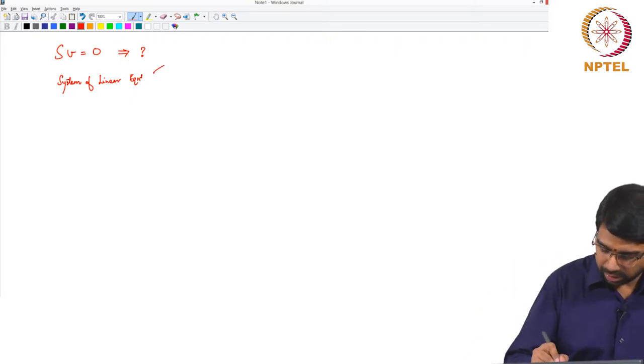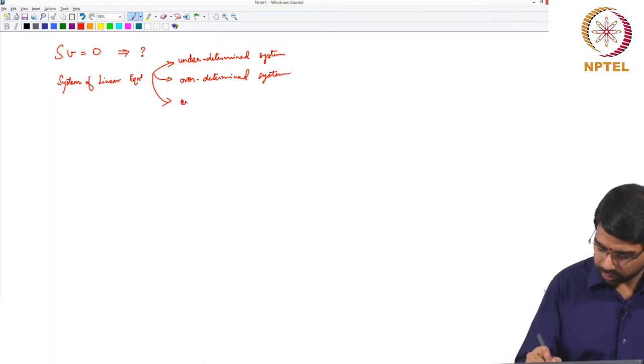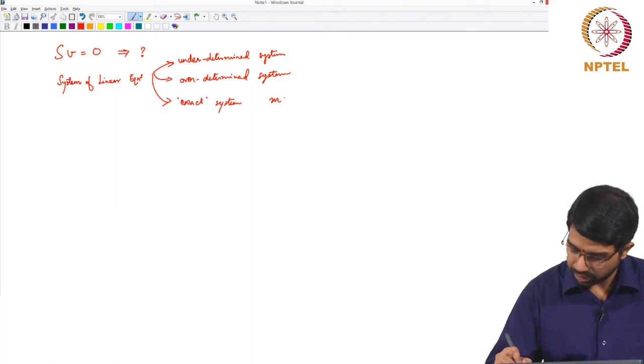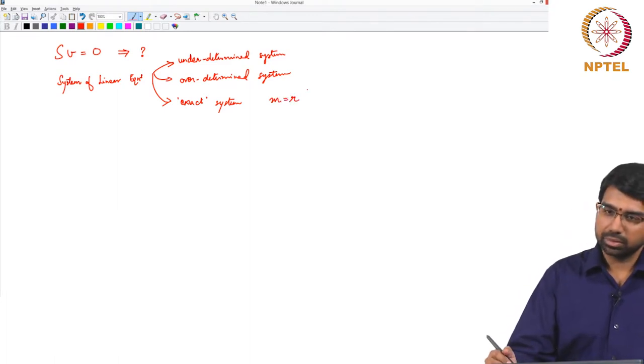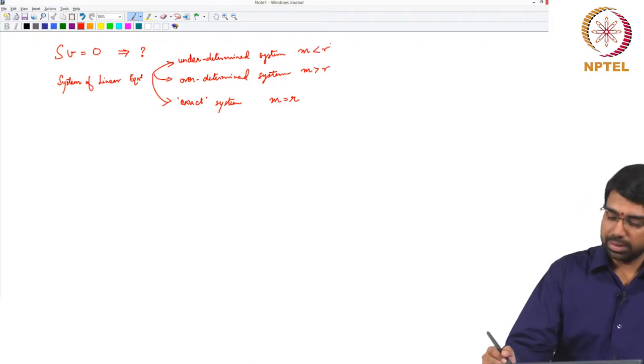The moment you have a system of linear equations, you could have an underdetermined system or an overdetermined or an exact system. This is M equal to R, M greater than R, or M less than R.